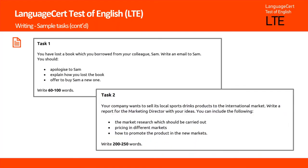Here are some more examples of writing tasks. Task one asks candidates to write an email to a colleague from work about a book they borrowed from them but which they lost. They should apologise to their colleague, explain how they lost the book, and offer to buy a new one. Candidates need to write between 60 and 100 words.